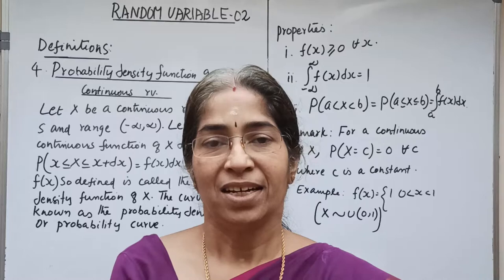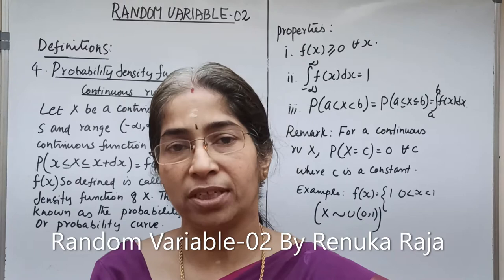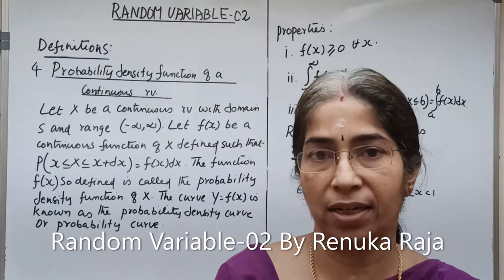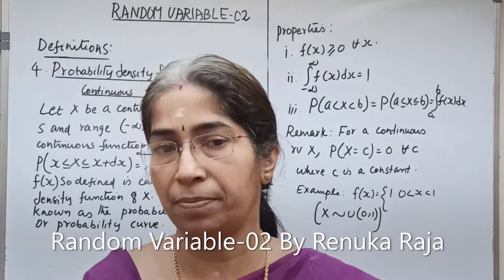We continue the topic on random variables. We have mentioned some definitions of random variables. The next definition is the probability density function of a continuous random variable. A continuous random variable is a random variable which can assume any value between certain limits.